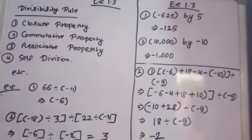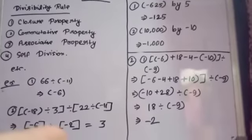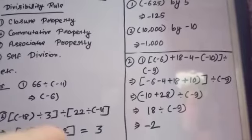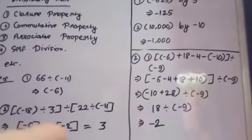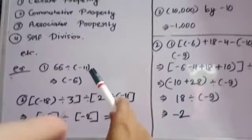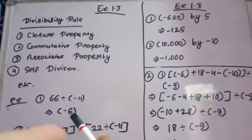Self-division. Like in the first example, I have made you understand 66 divided by minus 11. You can see 66 divided by minus 11, how much you are getting? Minus 6. So we are getting minus 6 as the answer.